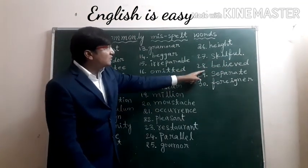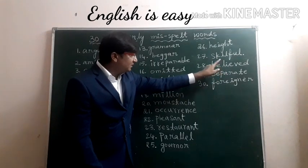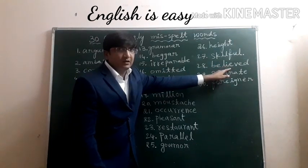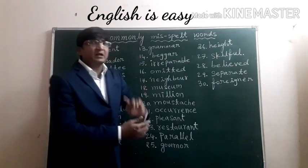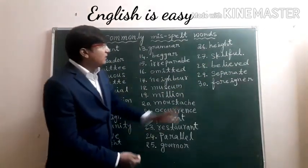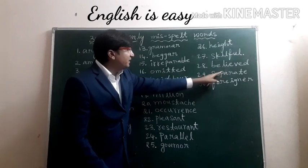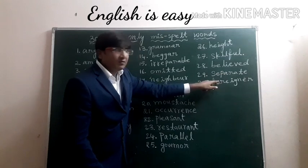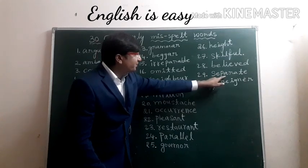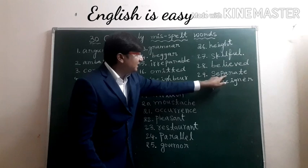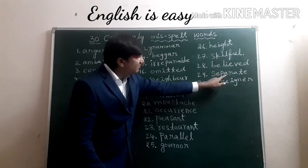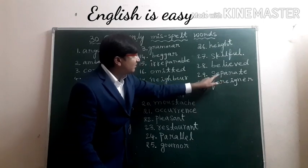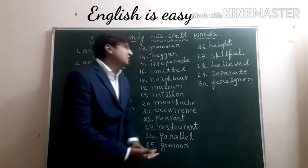Twenty-eighth: Believed. In this word, we will miss the letter E. But this is the correct spelling — B-E-L-I-E-V-E-D — learn and remember. Twenty-ninth: Separate. Here we do a mistake — in place of A, we write E. We write S-E-P-E-R-A-T-E. But that's wrong. The correct spelling is S-E-P-A-R-A-T-E.